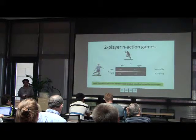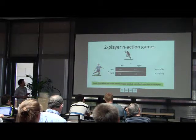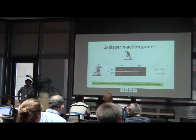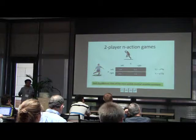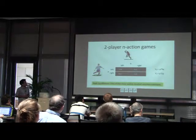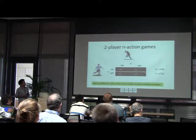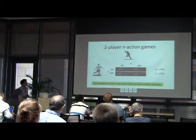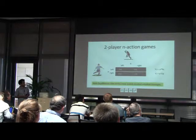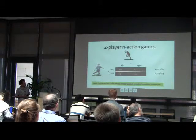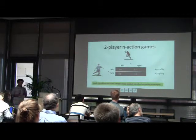We'll be interested in two-player n-action games. Each entry in the game matrix denotes the payoffs for the row and the column player. Both players play strategies according to some distributions — say P and Q — and depending on their strategies they get some payoffs. The row player gets a payoff of P-transpose times R times Q, and similarly the column player gets a payoff of P-transpose times C times Q, where R and C are the payoff matrices for the row and column player respectively.